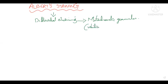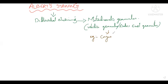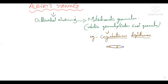Metachromatic granules are also known as volutin granules or Babes-Ernst granules. They are present in bacteria like Corynebacterium diphtheriae, which causes diphtheria disease. These metachromatic granules act as inclusion bodies for the storage of reserve food material.